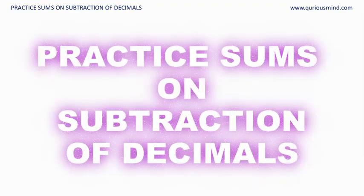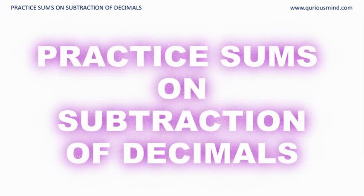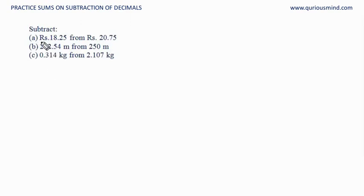Hello everyone, in this video we will solve a few practice sums on subtraction of decimals. First problem: subtract Rs 18.25 from Rs 20.75. We know the 'from' number comes first, so we write them one below the other. First we will align the decimal point and accordingly we will write the numbers. Now subtract just like whole numbers.